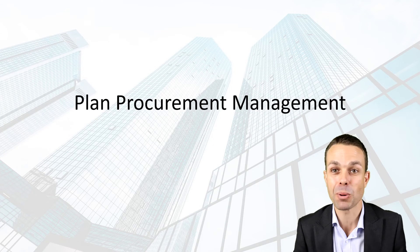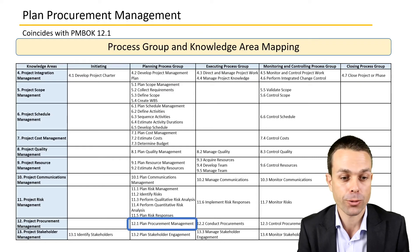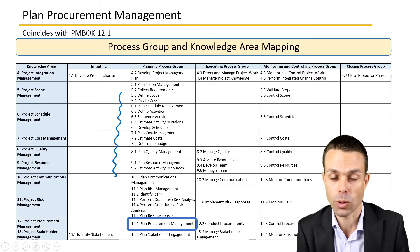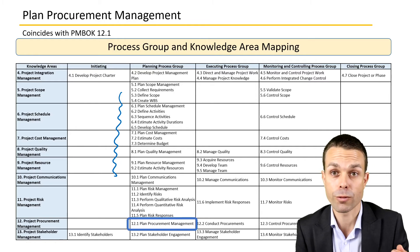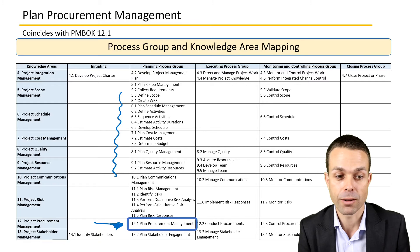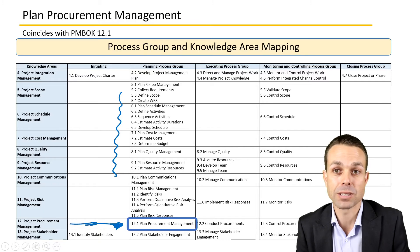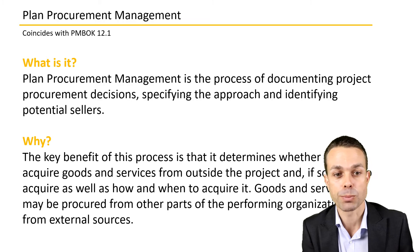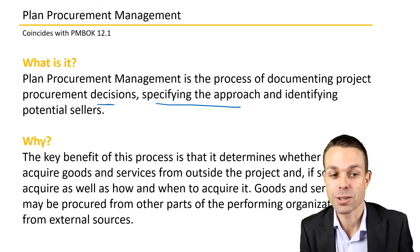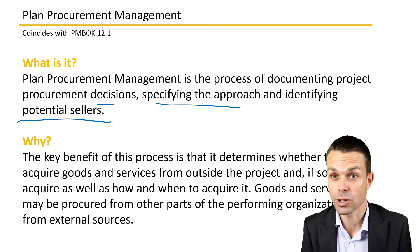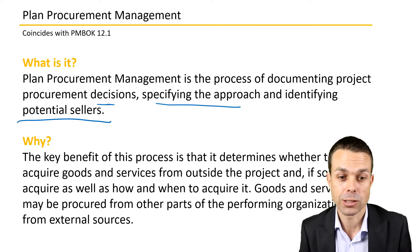Welcome back to these processes from the Project Management Body of Knowledge. We're now looking into planning procurement management. We've been through all the other knowledge areas — project risk, scope, schedule, cost, quality — and now we might need someone else to actually do the work for us. The plan procurement management process is that process of documenting project procurement decisions, specifying the approach, and identifying potential sellers. The key benefit is it determines whether to acquire goods and services from outside the project, and if so, what to acquire and how and when to acquire it.